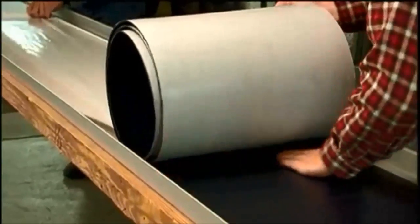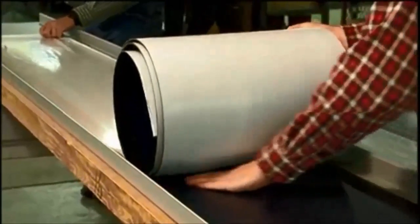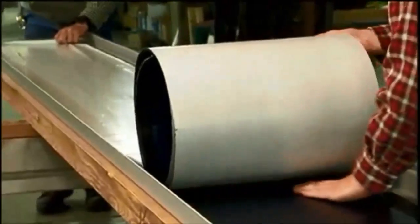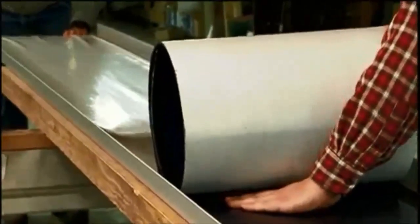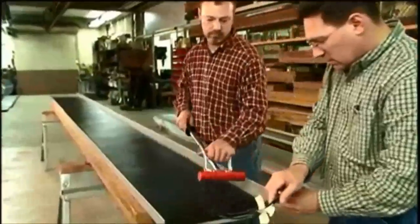Pay attention to the sideways location of the laminate as it is being unrolled to make sure that it doesn't drift from its proper placement. Once the entire laminate is in its proper location, roll it with a rubber wheeled rolling tool.